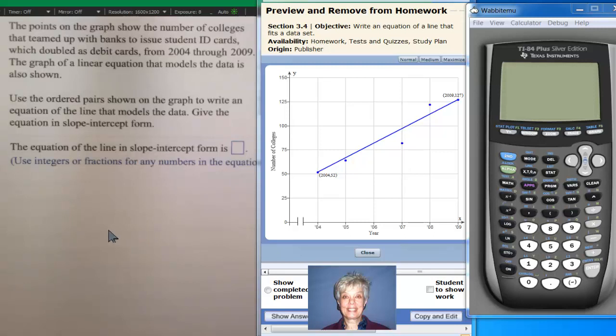Use the ordered pairs - remember, ordered pairs means the same thing as points - use the ordered pairs shown on the graph to write an equation of the line that models the data. Give the equation in slope-intercept form. Slope-intercept form is y equals mx plus b. So here are the points, the ordered pairs.